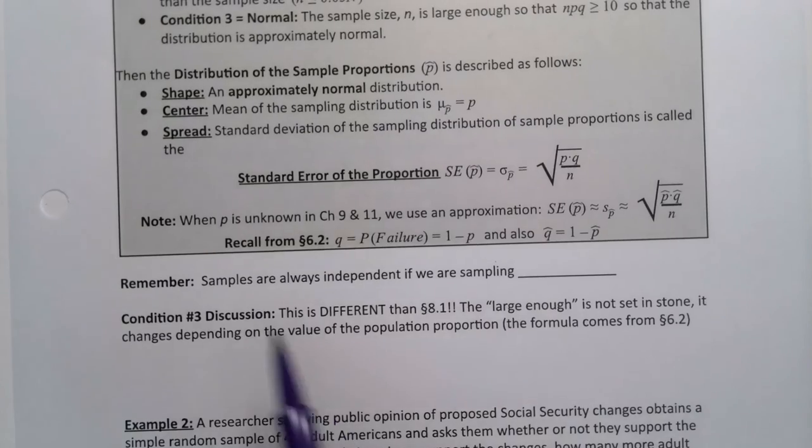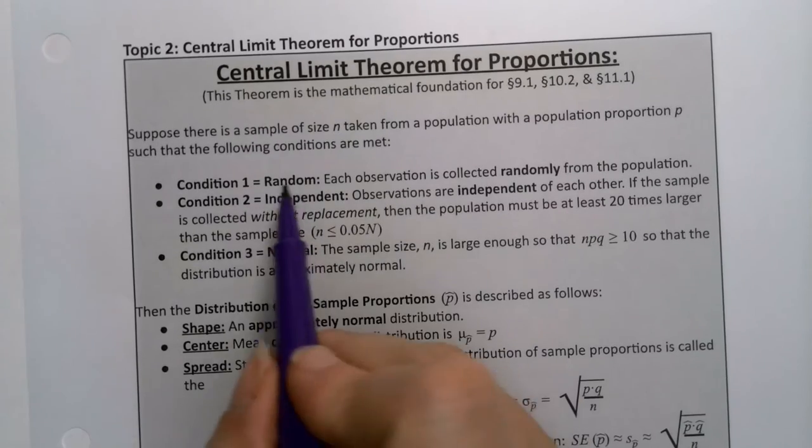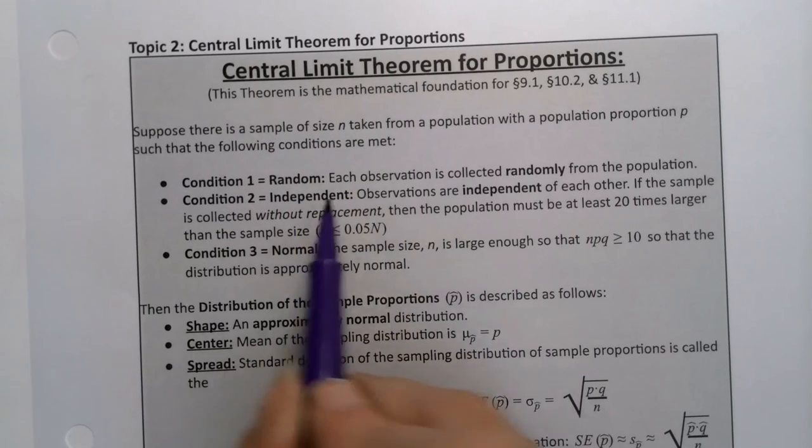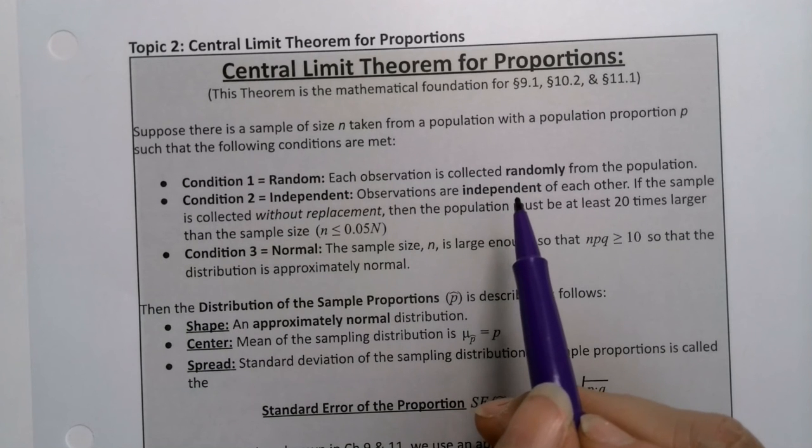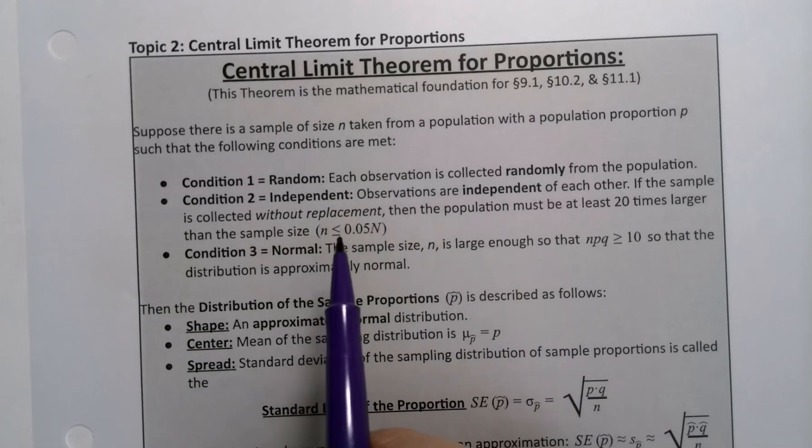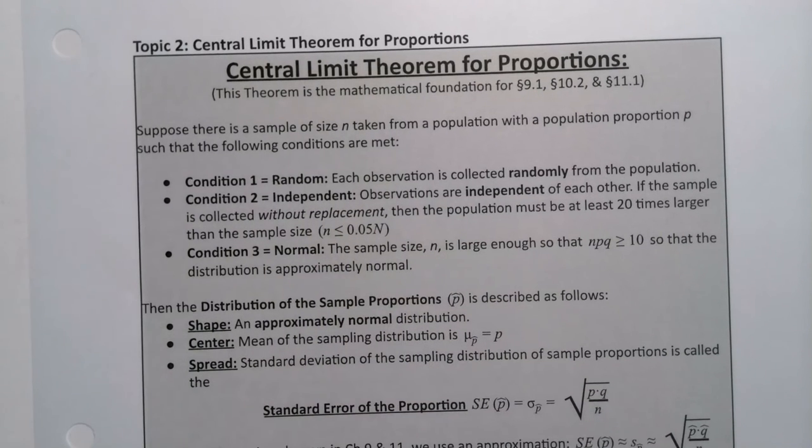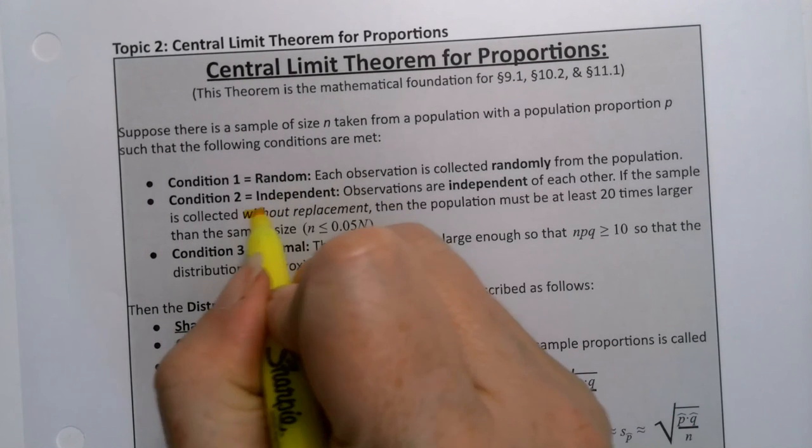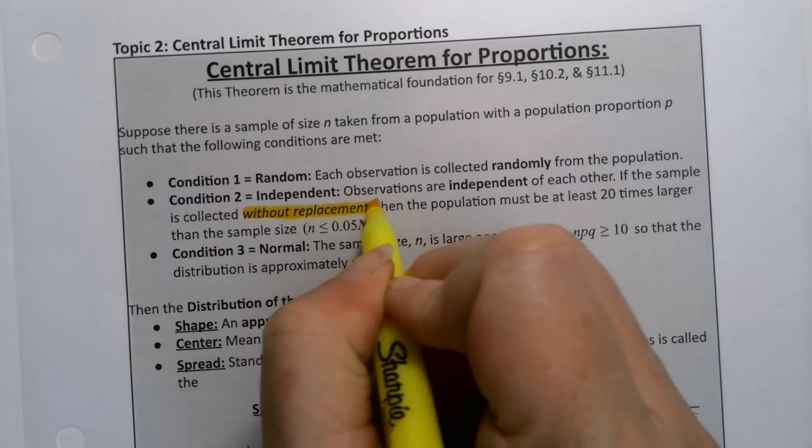And then, otherwise bias and independent because we need to have those observations be independent of each other. Otherwise, we also have issues, but we make that happen. If you're sampling without replacement, without replacement's key. So if you're doing this without replacement, which we almost always are, then you would need N to be less than 0.05 capital N.